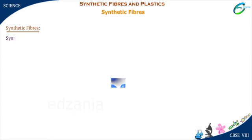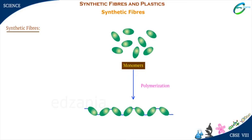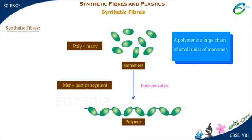Each small unit is a chemical substance called a monomer. Many such small units of monomer combine to form a single large unit called a polymer. Poly means many and mer means part or segment.